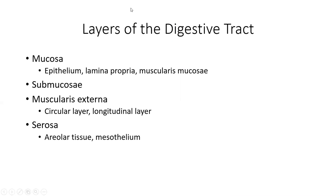The layers of the digestive tract, starting from the esophagus through the intestines, are all pretty much the same. They have three main portions: the mucosa, submucosa, and muscularis externa. The inside is the epithelium, which lines everything. These cells secrete mucus to help protect from abrasion while swallowing, and also to protect from digestive enzymes and acids.